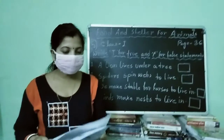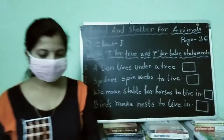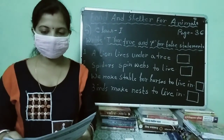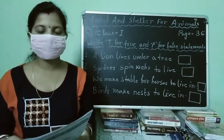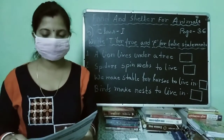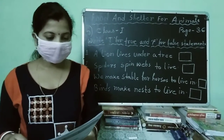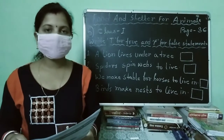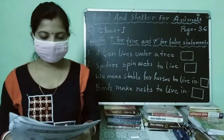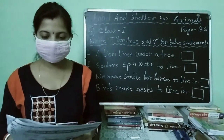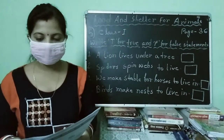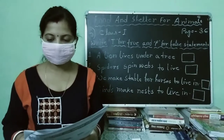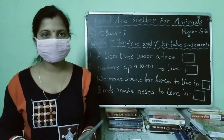We make shelters for some animals like the dog, horse, cow, etc. A dog lives in a kennel, a horse lives in a stable, and a cow lives in a shed.